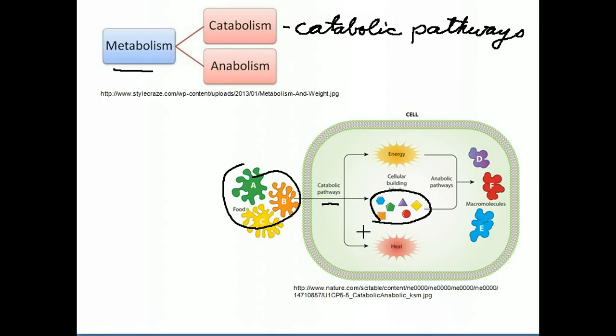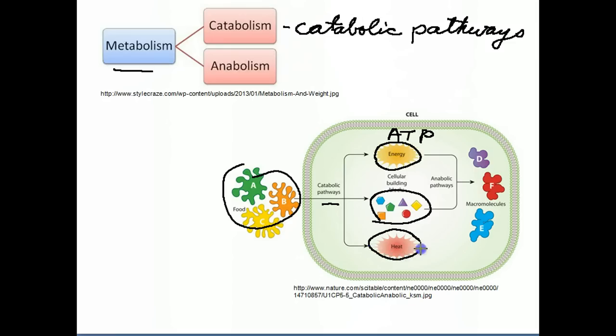Now, what catabolic pathways have in common is by breaking chemical bonds to make smaller molecules, they're going to release energy, chemical energy, and that's going to be in a usable form for the cells, and that's called ATP. Some energy is going to be released but it's not usable, and it's going to be given off as heat. So that's catabolism.